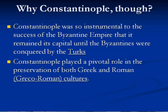Constantinople was instrumental to the success of the Byzantines, and it remained the Byzantine capital for years and years, until it was conquered by the Turks in the 1400s. The key here is that they preserved Greek and Roman culture. If you take nothing else away from this video, remember this: they preserved Greek and Roman culture through artwork, libraries, public buildings, scholars, and knowledge. The key role is that they preserved and kept that Greek and Roman knowledge alive.